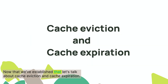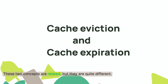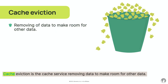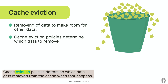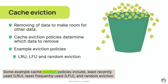Now that we've established that, let's talk about cache eviction and cache expiration. These two concepts are related, but they are quite different. Cache eviction is the cache service removing data to make room for other data. This can happen when the cache is full and there is no more room to store new data. Cache eviction policies determine which data gets removed from the cache when that happens. Some example cache eviction policies include least recently used (LRU), least frequently used (LFU), and random eviction.